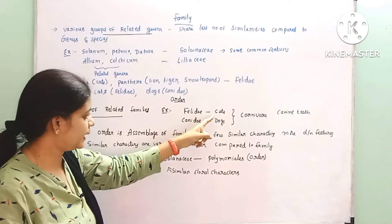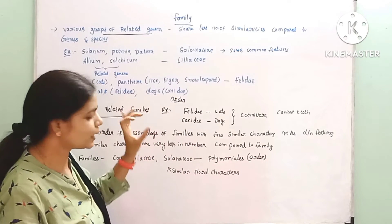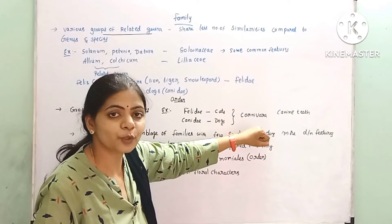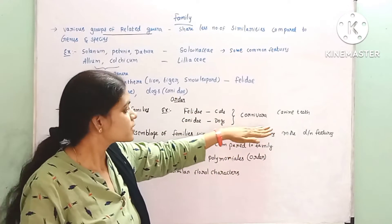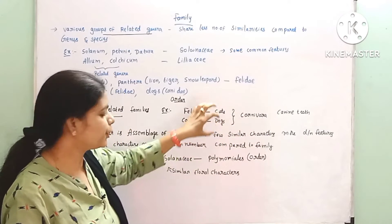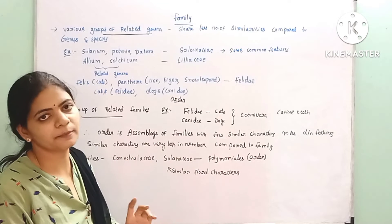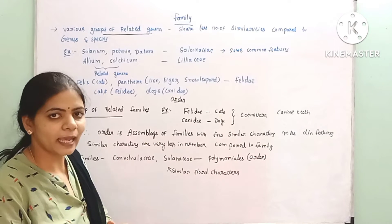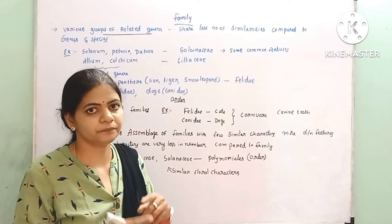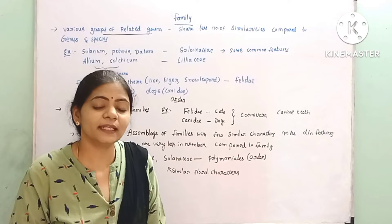For example: cats belong to Felidae, dogs belong to Canidae — these are kept in separate families. But these two families were kept under the common order Carnivora, because both cats and dogs are meat-eating animals — carnivores are flesh-eating animals.